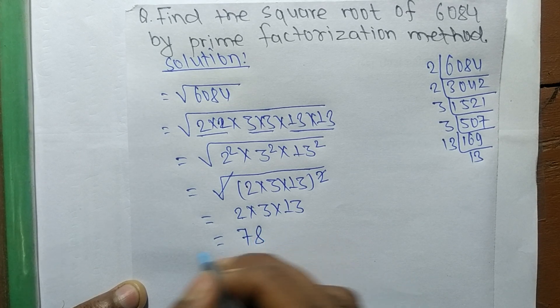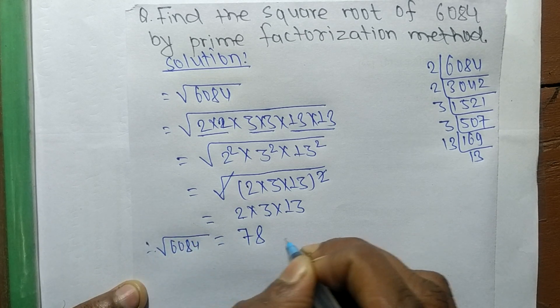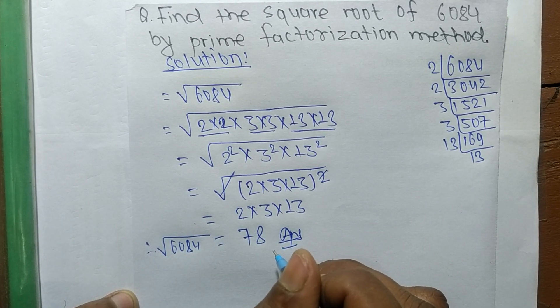So the square root of 6084 is equal to 78. So this much for today.